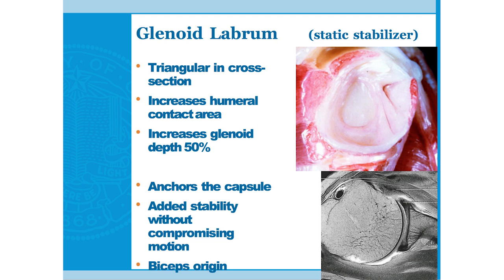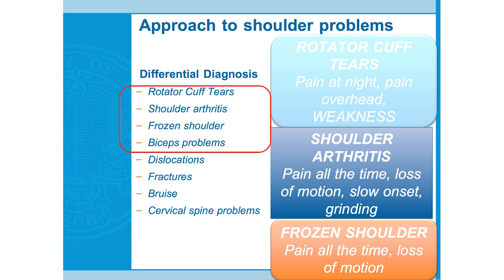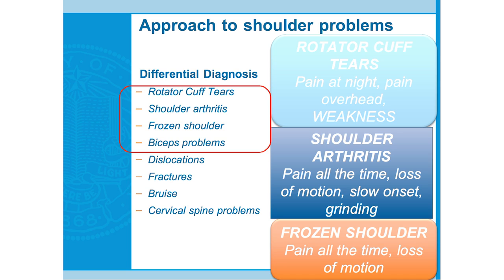The glenoid labrum deepens the glenoid; those are the ligaments that provide stability to the shoulder joint. Now that we've gone through the basics, we're going to get into specific problems — the real meat of the talk. The top four items on this differential diagnosis are the most common types of problems patients will present with in clinic.